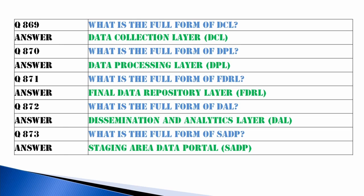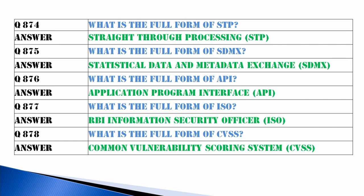What is FDRL? Final Data Repository Layer. What is DAL? Dissemination and Analytics Layer. What is SADP? Staging Area Data Portal. What is STP? Straight-Through Process. What is SDMX? Statistical Data and Metadata Exchange.